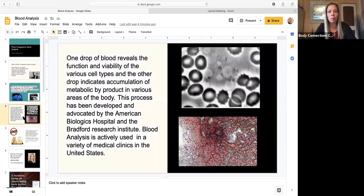One drop of blood reveals the function and viability of the various cell types, and the other drop indicates an accumulation of metabolic byproduct in various areas of the body. This process has been developed and advocated by the American Biologics Hospital and the Bradford Research Institute.